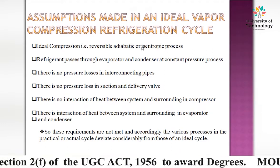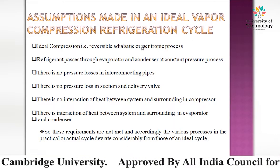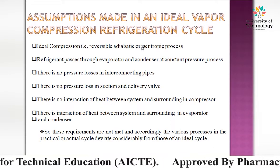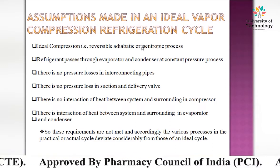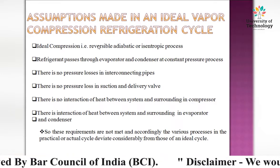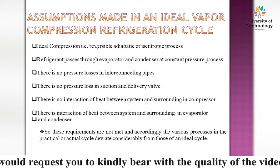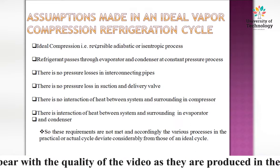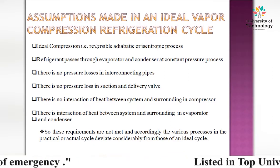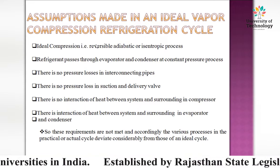In the ideal compression cycle, the refrigerant passes through the evaporator and condenser at constant pressure. There are no pressure losses in any interconnecting pipes or in the suction and delivery valves. There is no heat interaction between the system and surroundings during compression — no loss of heat takes place in the compression process.